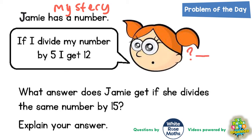Start with a question mark, and if we divide it by 5 we get 12. Now, to get back to her mystery number we need to do the opposite and work in reverse. So if we start with 12 and work in reverse, the reverse of divide by 5 is multiply by 5, and 12 multiplied by 5 is 60.